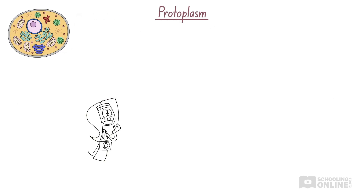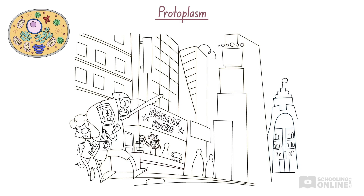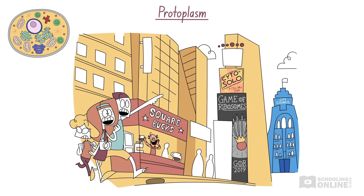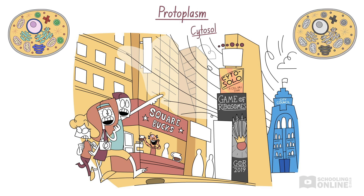Sally is standing in Times Oval, a major intersection located right in the centre of Zoo York. There are giant entertainment complexes and electronic billboards displaying the latest news. The air is filled with a mixture of scents — there's so much to do. Likewise, all the action inside an animal cell is found in the protoplasm, which lies inside the cell membrane. The cytosol, in which all the organelles float, resembles the city air which fills every corner.